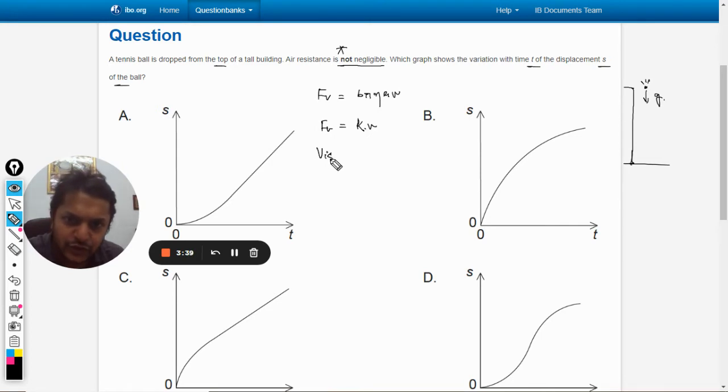As the velocity increases, the viscous force increases, the drag force increases. Now initially there is no drag force because velocity is zero, so there is only one force, that is mg minus, I can say, fv. So this will be the net force.